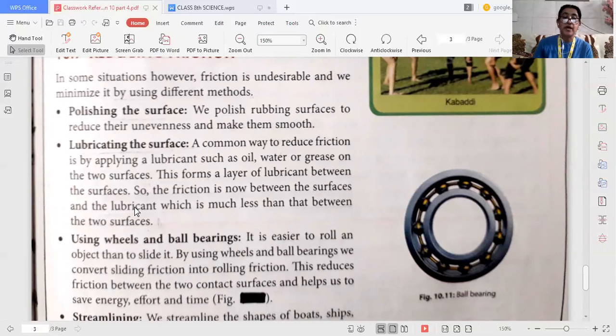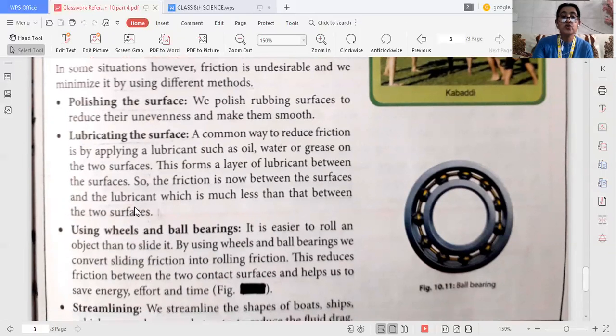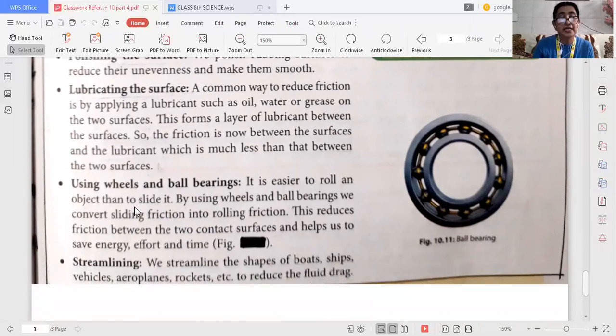Using wheels and ball bearings. It is easier to roll an object than to slide, so we can use wheels and ball bearings to convert sliding friction into rolling friction, which will reduce the friction between two contact surfaces and also help to save energy.